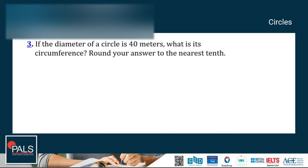Number three: if the diameter of a circle is 40 meters, what is its circumference? Round your answer to the nearest tenth. So the circumference is equal to πd or 2πr. Since we have the diameter, we can use the formula πd, which is equal to 3.14 for pi × 40 for the diameter, which equals 125.6 meters.